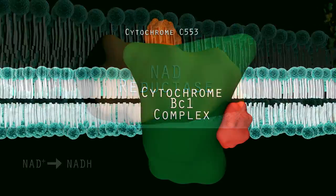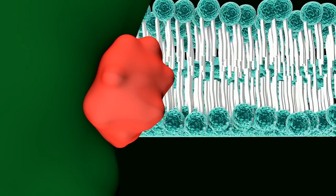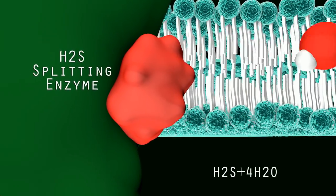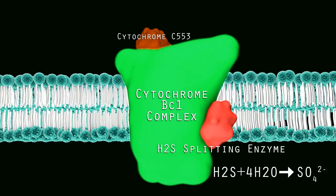The lost electron in the cycle is replaced by splitting H2S with an H2S splitting enzyme. With the addition of four H2O molecules, H2S is converted to one sulfate molecule and the electron is passed to cytochrome BC1.